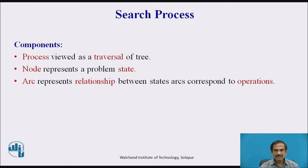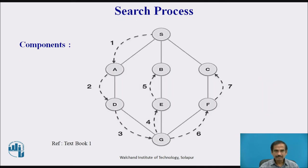How efficient your search process is depends on how efficiently you traverse your particular tree to find a solution, or whether you go into a blind alley or end up in a combinatorial explosion. The tree has nodes connected by arcs, which are operations allowing movement from one node to another depending on the operation carried out.